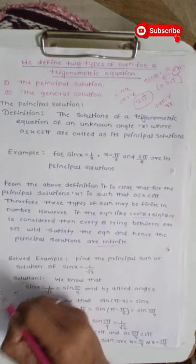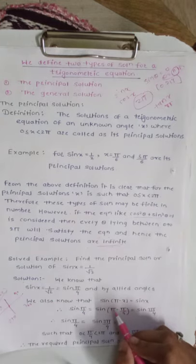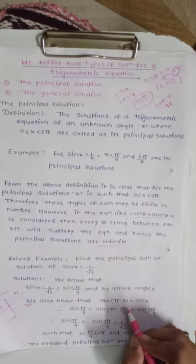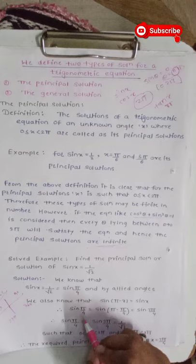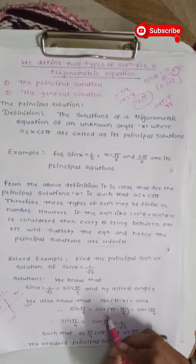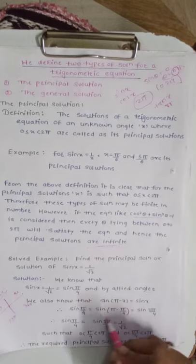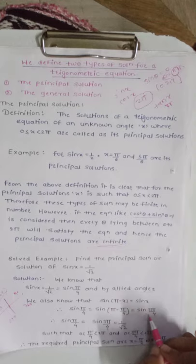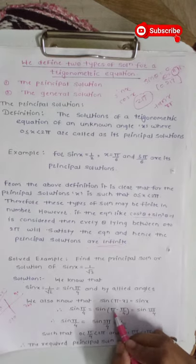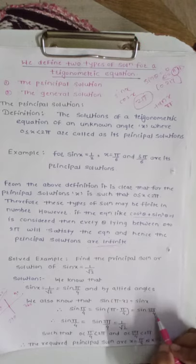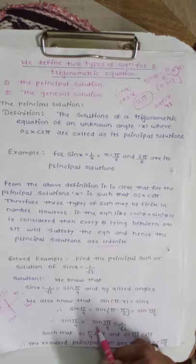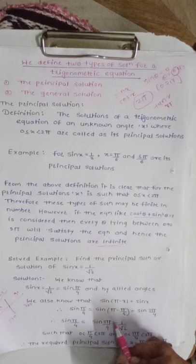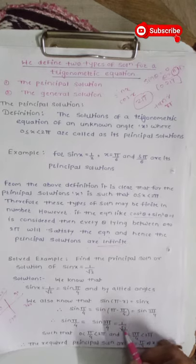In the second quadrant, sin is positive and the formula sin(pi minus x) is equal to sin x applies. So sin(pi by 4) is equal to sin(pi minus pi by 4) which is equal to sin(3 pi by 4). Therefore sin(pi by 4) equals sin(3 pi by 4) equals 1 upon root 2. So the principal solutions of sin x equal to 1 upon root 2 are x equal to pi by 4 and x equal to 3 pi by 4.